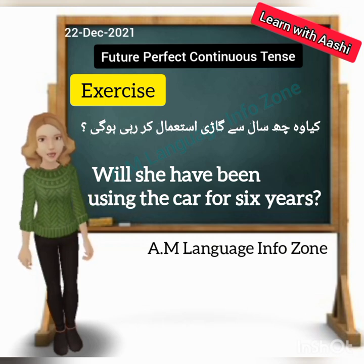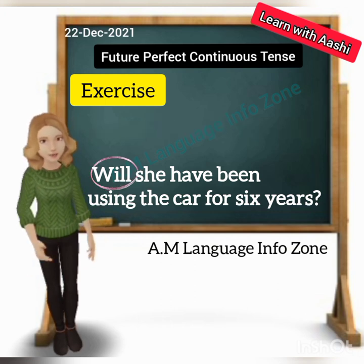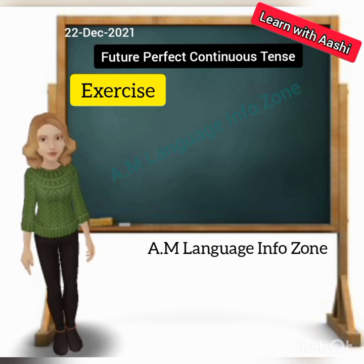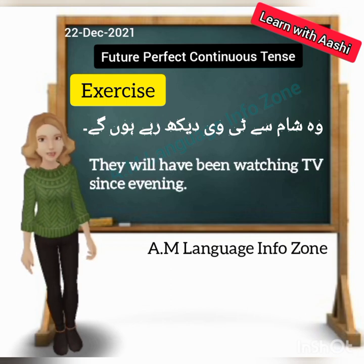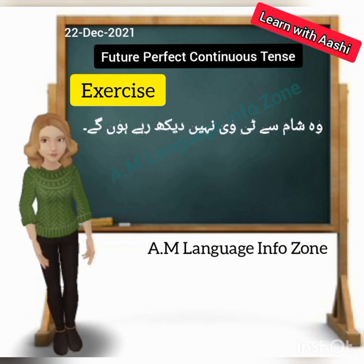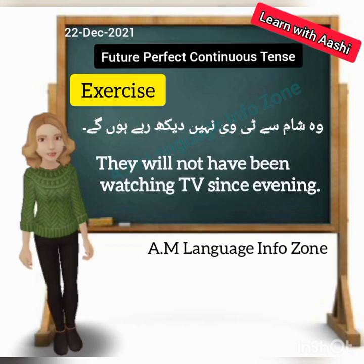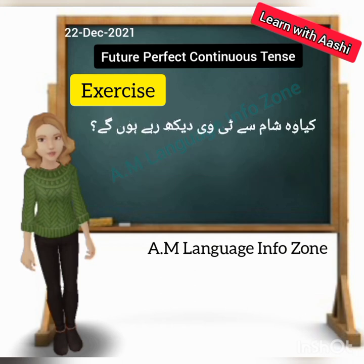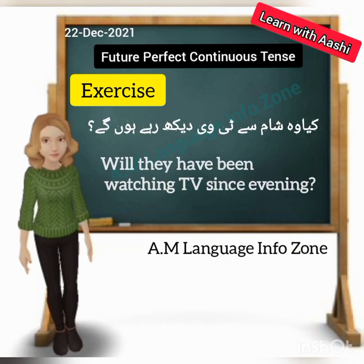Fifth sentence: 'They will have been watching TV since evening.' We confirm this uses a specific time — evening — so 'since' is used. Negative: 'They will not have been watching TV since evening.' For the interrogative form, the helping verb 'will' moves to the second position — the front: 'Will they have been watching TV since evening?' In question form, we always bring 'will' to the starting position.